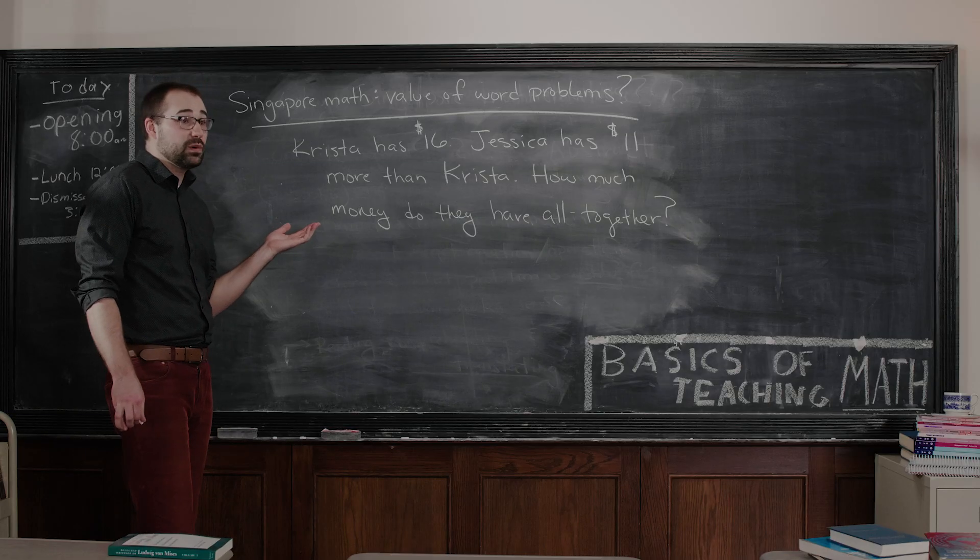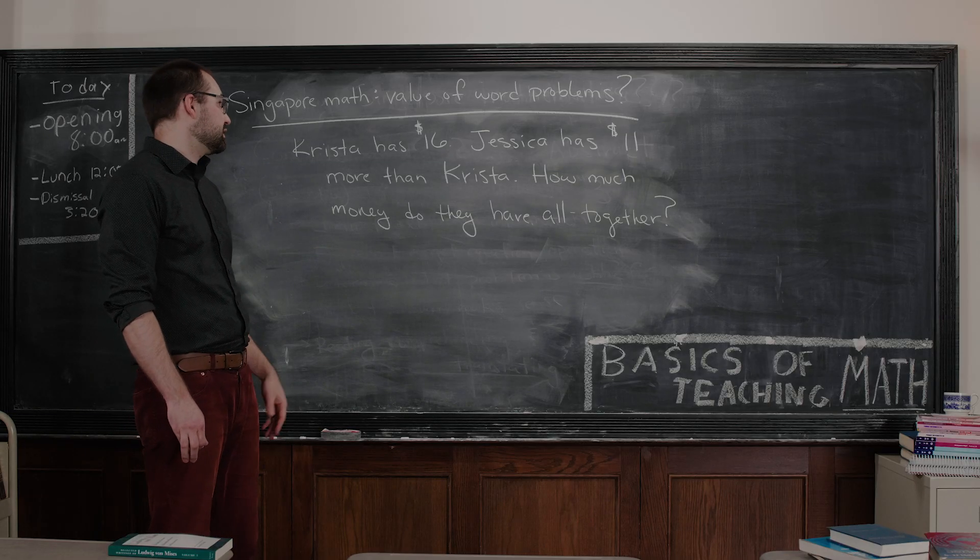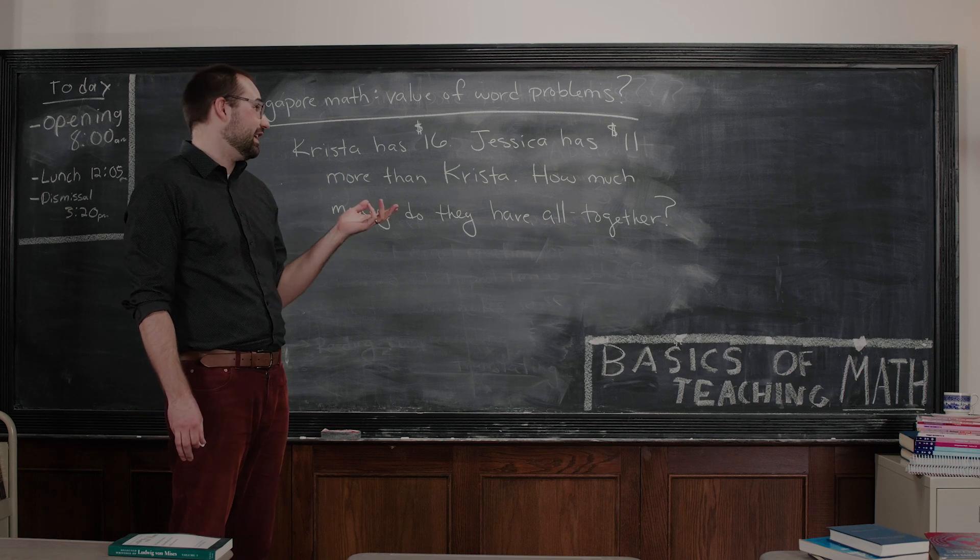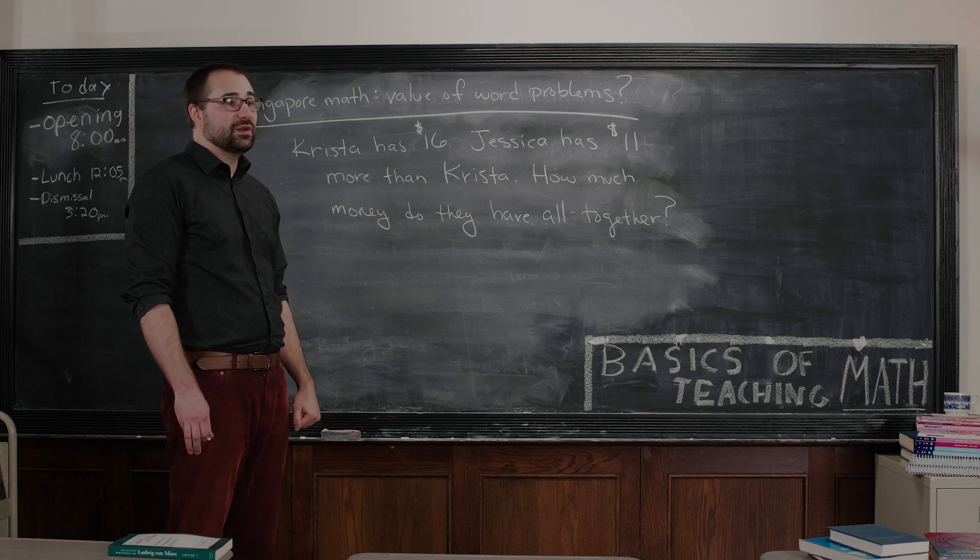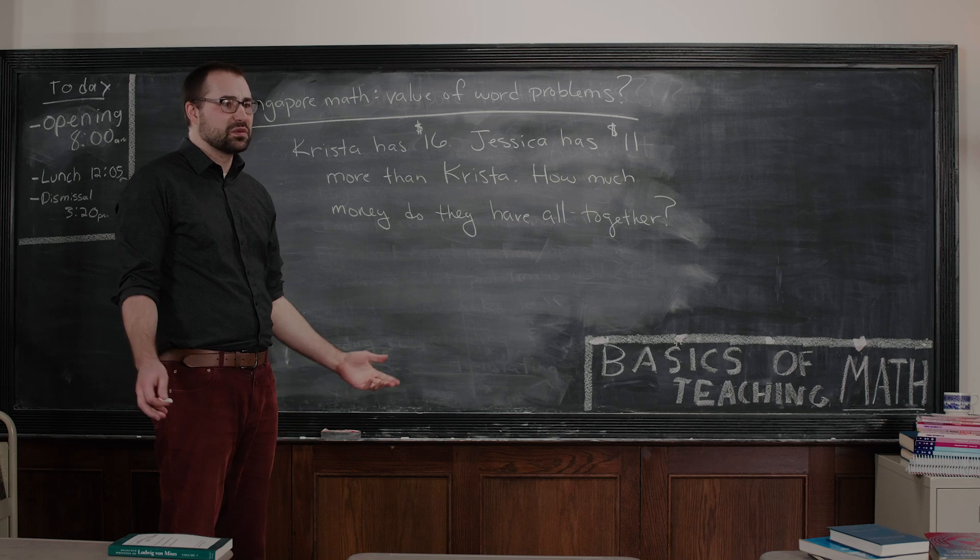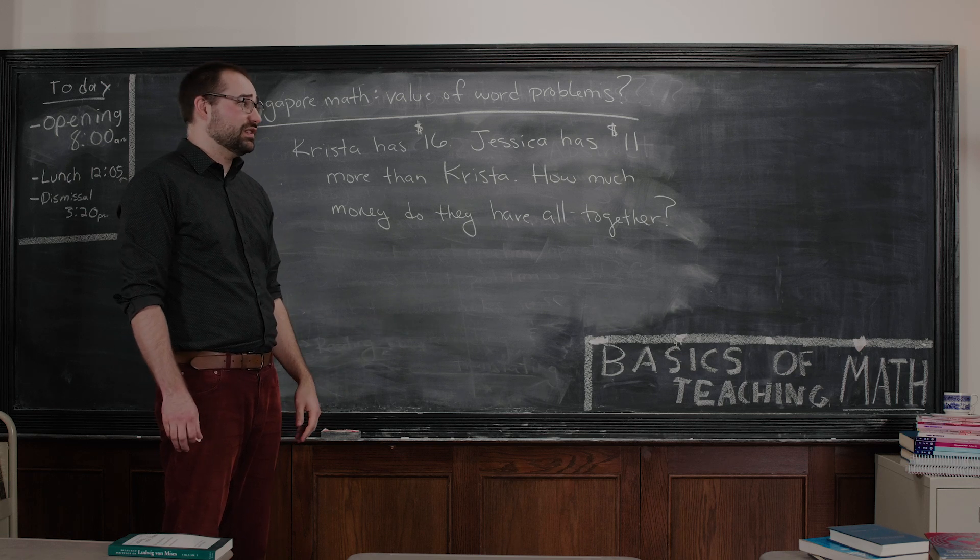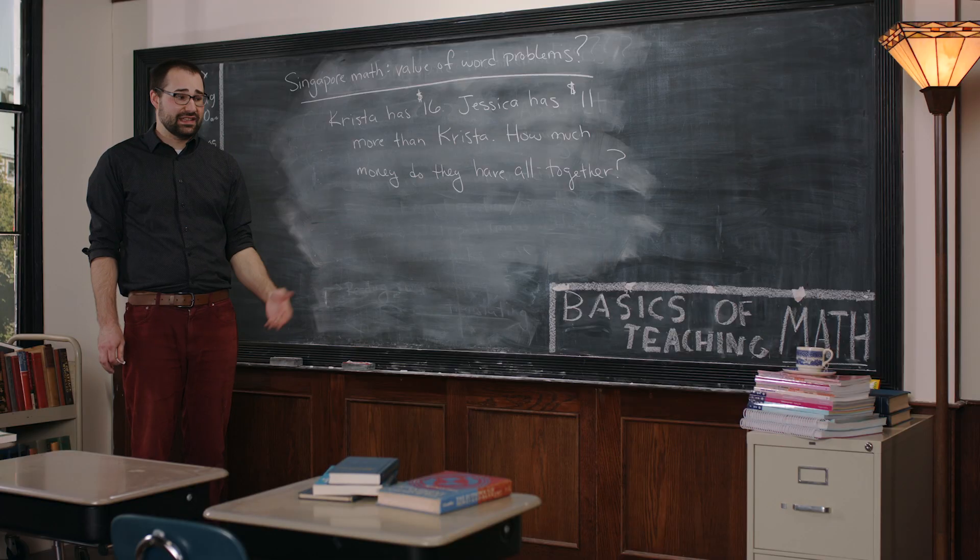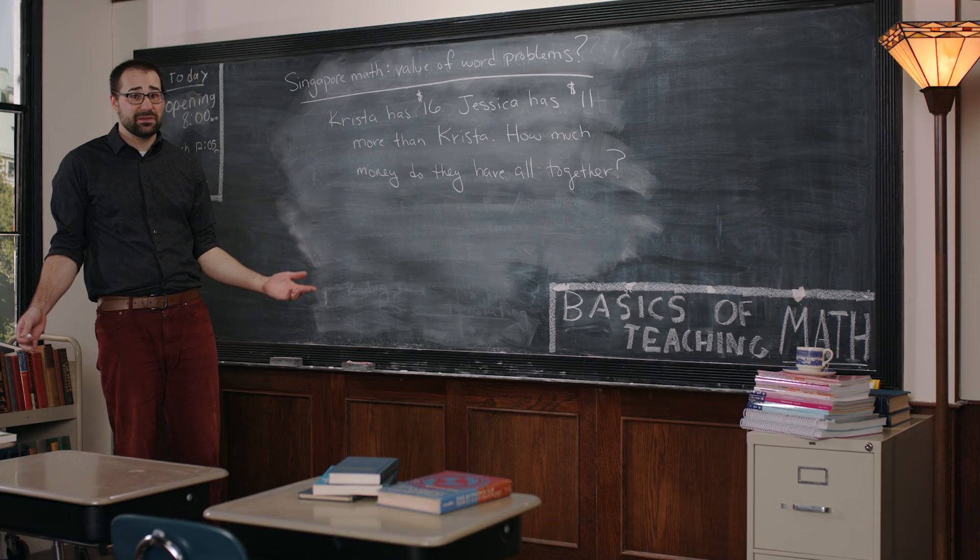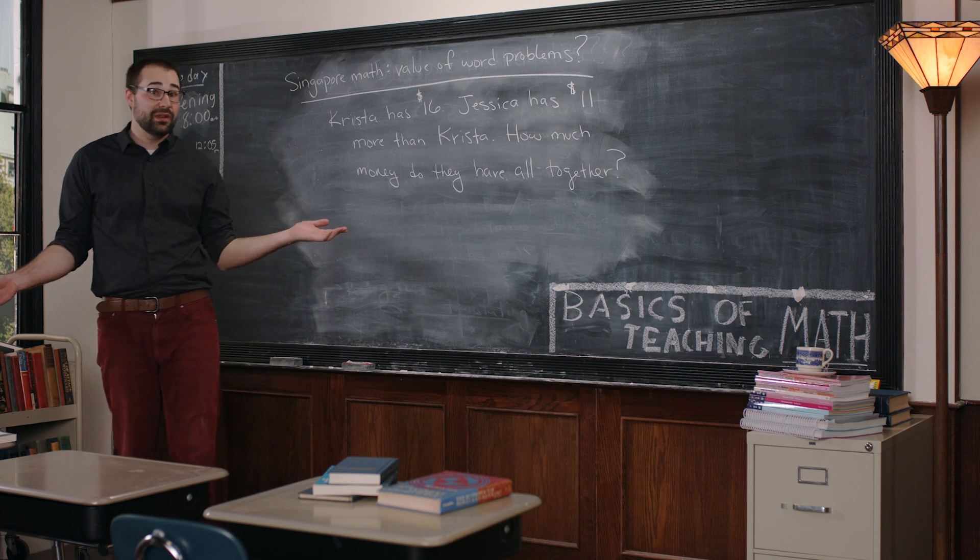First of all, this isn't a very easy one. It looks pretty easy on the surface: Krista has $16, Jessica has 11 more dollars than Krista, how much money do they have altogether? Looks reasonably easy, but actually to a third grader, and that's the textbook I pulled this out of, this is actually a very difficult problem. This is what we might call a two-step problem.